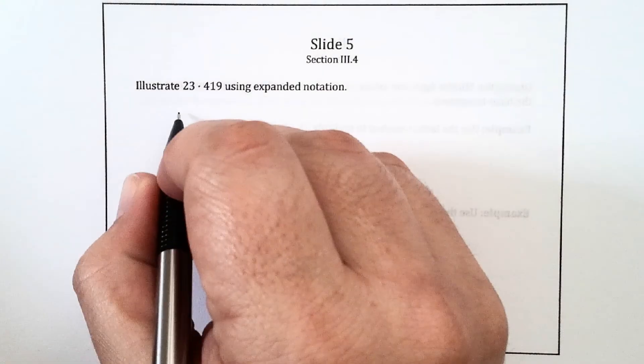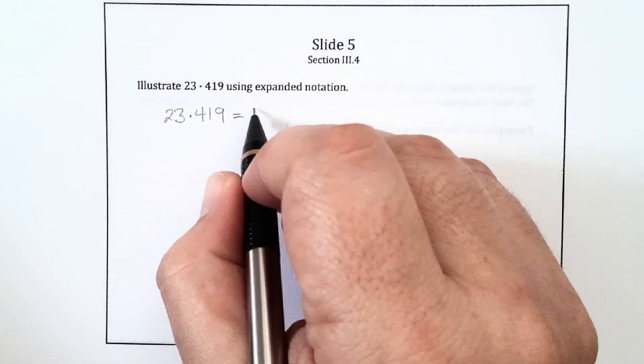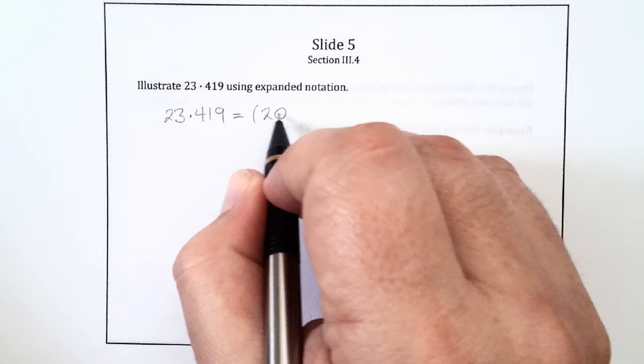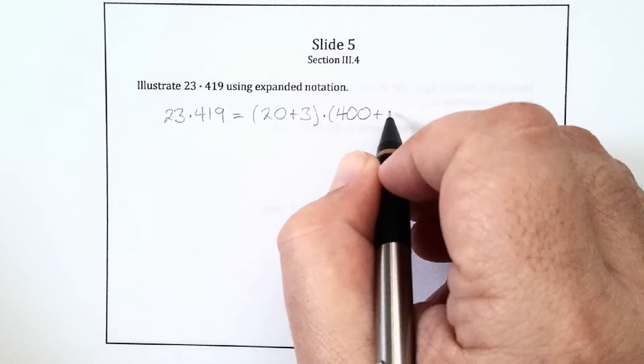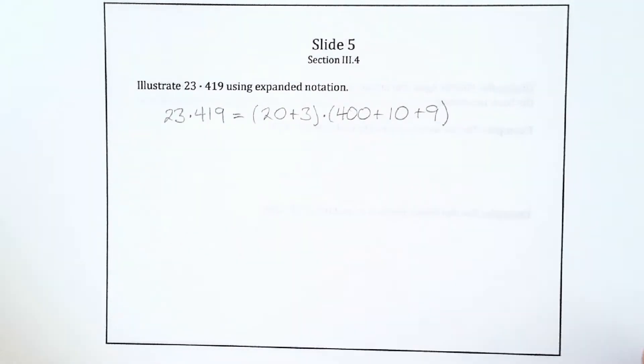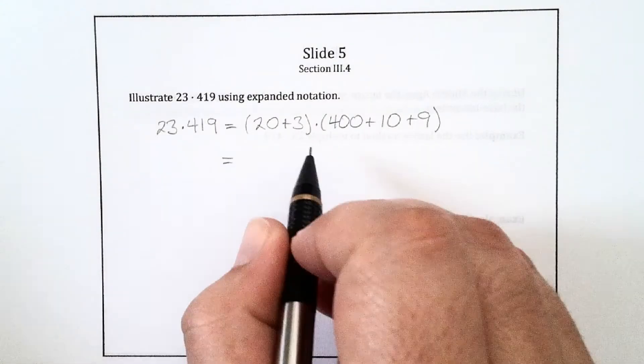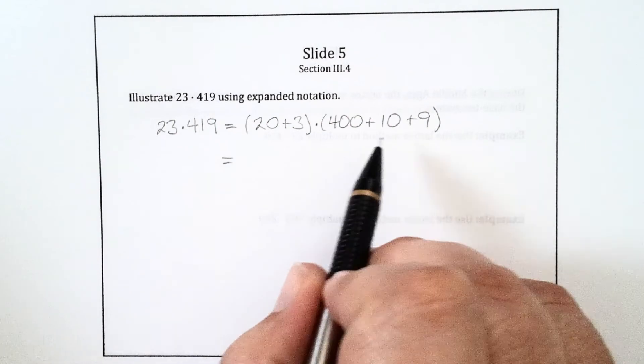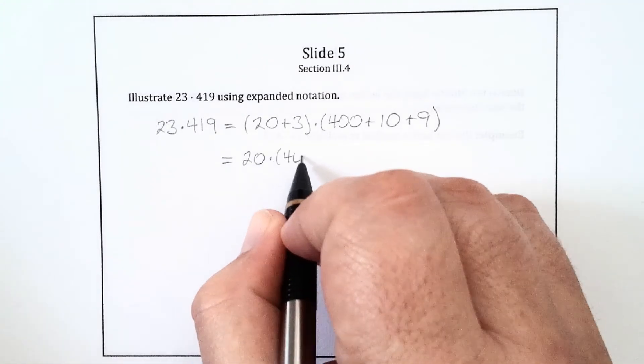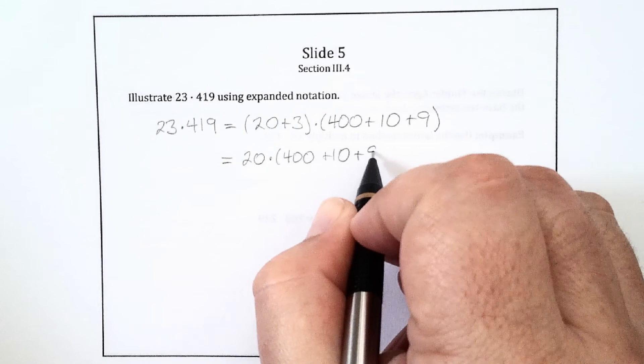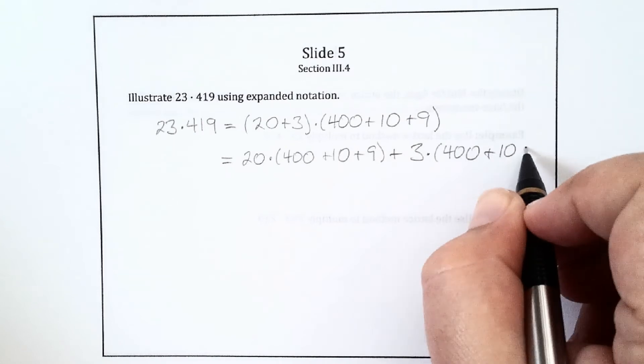So what we have is 23 times 419. I'm going to first write each of these in expanded notation, so that would be 20 plus 3 times 400 plus 10 plus 9. Now I use the distributive property twice. First I'm going to distribute the 419 to the 20 and the 3, so I get 20 times 400 plus 10 plus 9, plus 3 times 400 plus 10 plus 9.